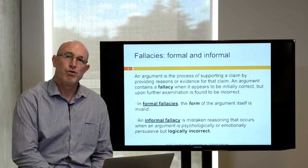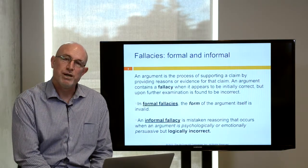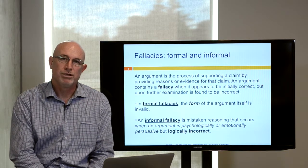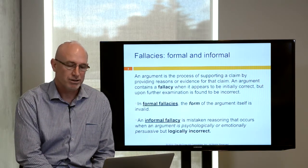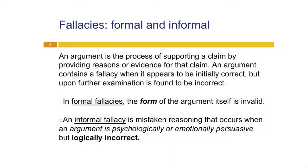There are formal and informal fallacies. A formal fallacy is where the form of the argument itself is flawed, and we'll look at this later in the course. But today we want to look at an informal fallacy, which is mistaken reasoning that occurs when an argument is psychologically or emotionally persuasive, but logically incorrect. It's psychologically or emotionally persuasive, but it's actually illogical.